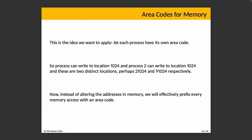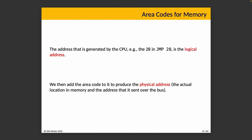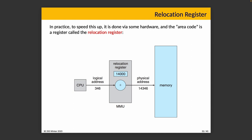An address generated by the CPU — like the 28 in a jump-to-28 instruction — is the logical address. We add the area code to the front to produce the physical address, the actual location in memory, and that's the address sent over the bus. To make that happen, we need a register that contains the area code and automatically adds it. In practice, this is called the relocation register. When the CPU issues a logical address, it goes into the memory management unit, which looks at the relocation register, adds that value to the memory address, and produces the physical address.